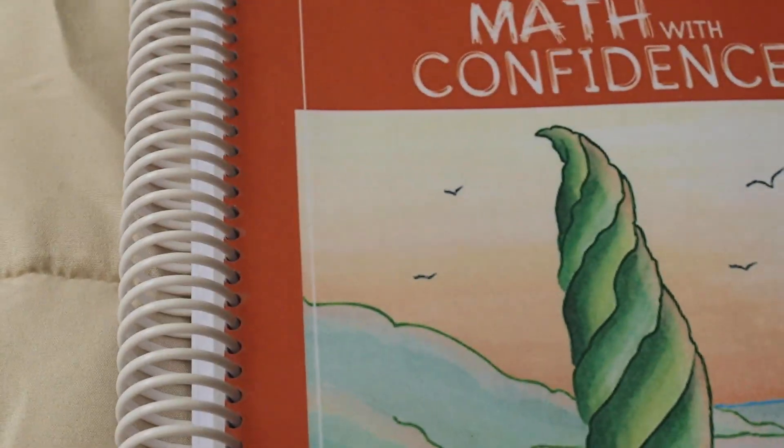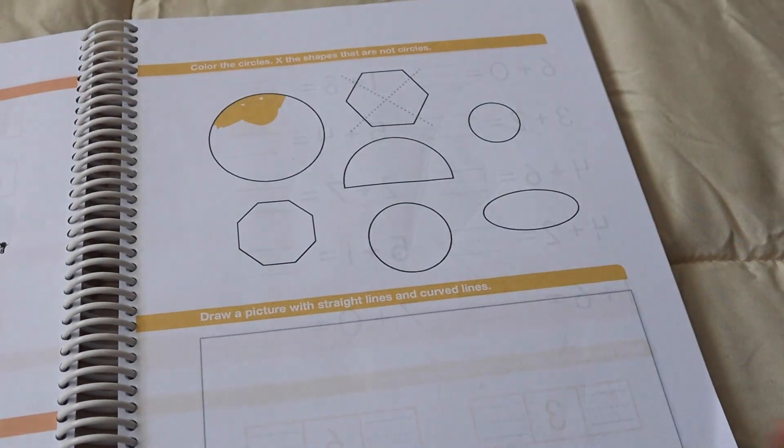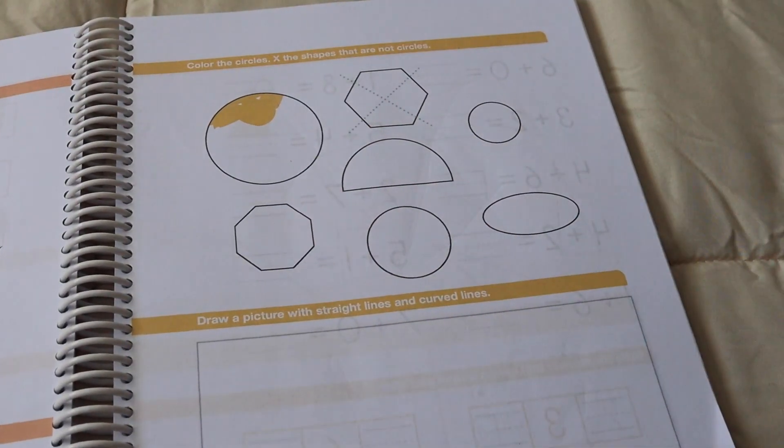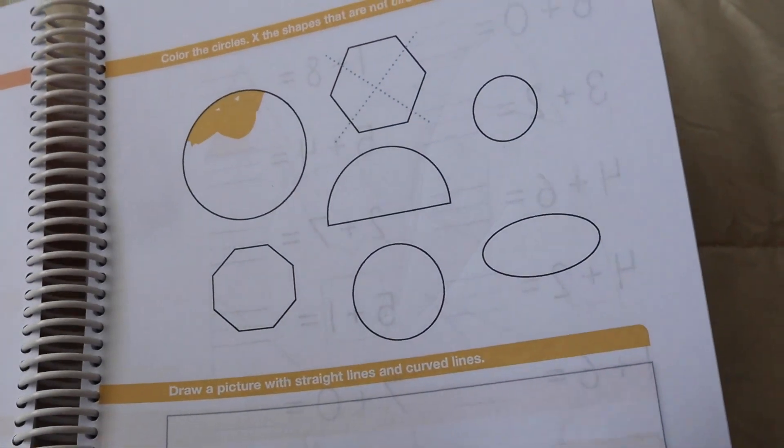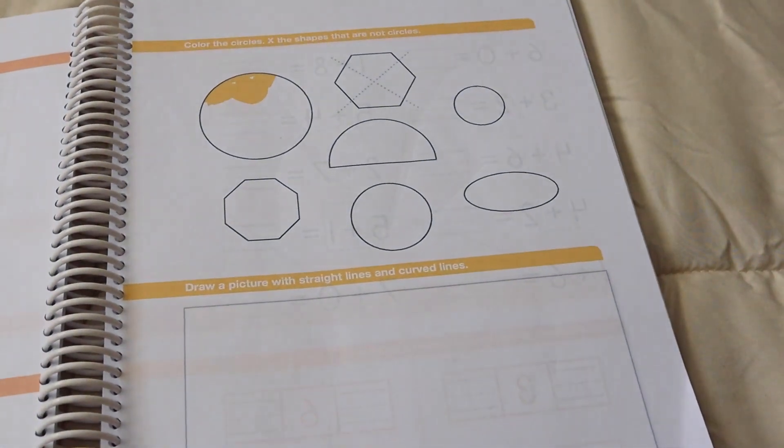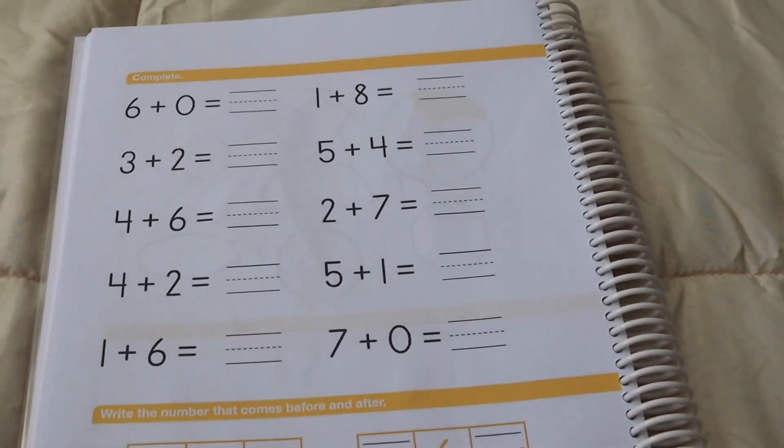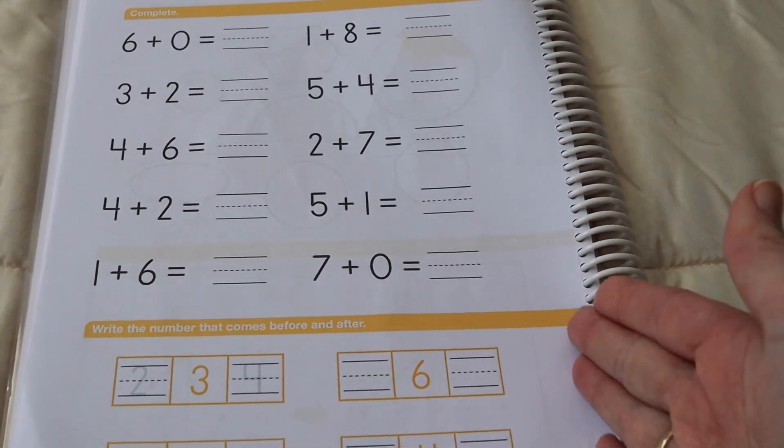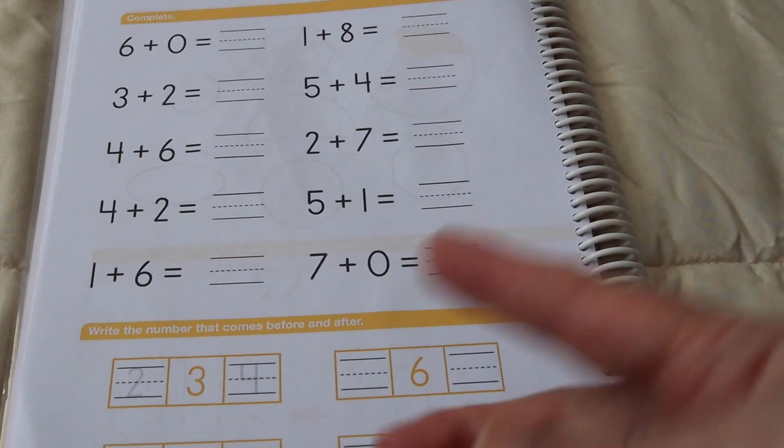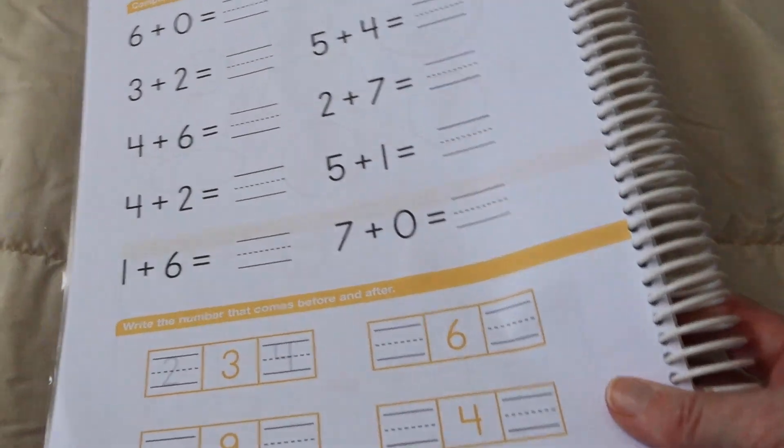So this is what the workbook looks like. And I will take you to where we're at. The front page of the workbook is stuff that you would have covered in that lesson just there. So here is, they're going to be working on identifying circles. And then it says, draw a picture with straight lines and curved lines. So it's literally exactly the information that they've just been taught. Then on the back page here, this is stuff that they've already learned. And so it's just review. And if you feel like your child really has mastered some of these things, feel free to cross off stuff, but this is what it's like.